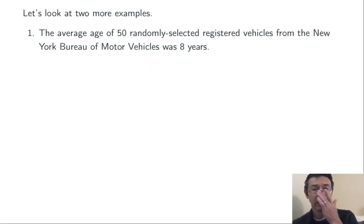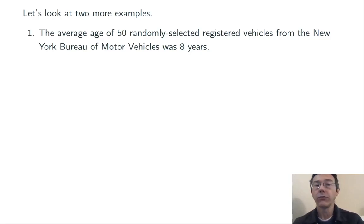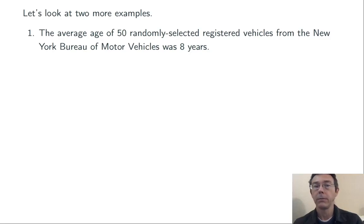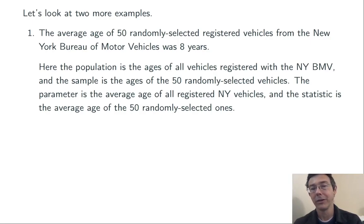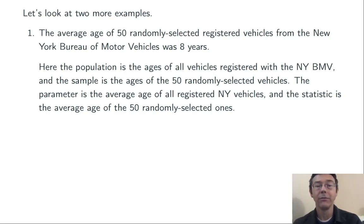Two more examples. Number one: the average age of 50 randomly selected registered vehicles from the New York BMV was eight years. The population is going to be the ages of all vehicles registered with the New York BMV, and the sample is going to be the ages of the 50 randomly selected vehicles.